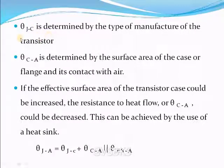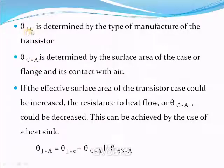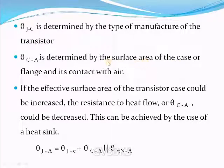From the case to ambient, the thermal resistance θca is determined by the surface area of the case or flange and its contact with air. The heat transfers from junction to case first, then dissipates into the surrounding ambient air. If the area is more, it can dissipate the heat more quickly; if the area is less, it takes more time. The case is also called a flange. If the effective surface area of the transistor case could be increased, θca could be decreased.